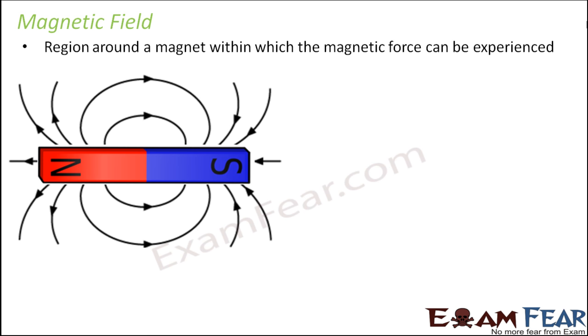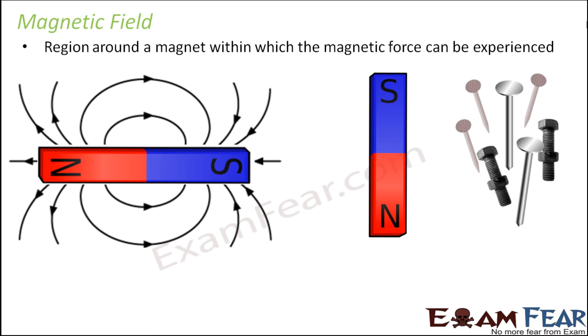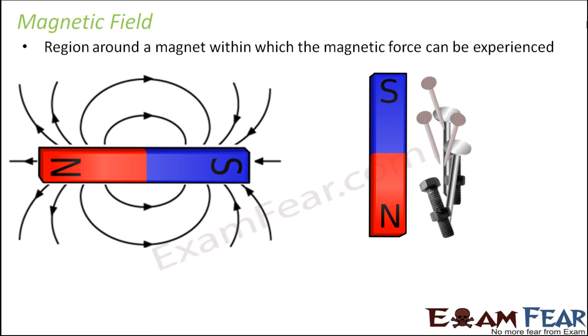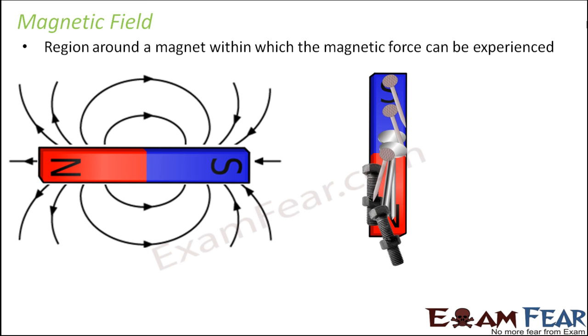So this region within which the magnetic force can be experienced is known as the magnetic field. Now, if you talk about the magnetic compass, when it is brought near a magnet it experiences the magnetic field and that is why it deflects. As you can see, they experience this attraction only when they exist within the region of the magnetic field. Now that we understand the magnetic compass and magnetic field, we can go ahead with the Oersted experiment.